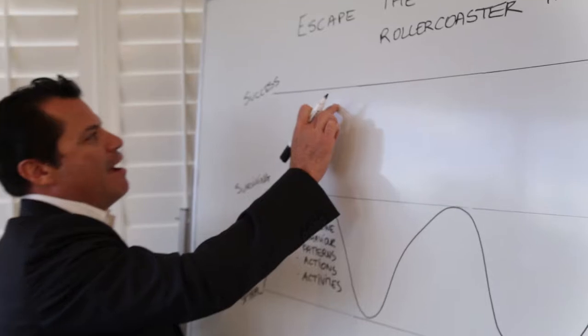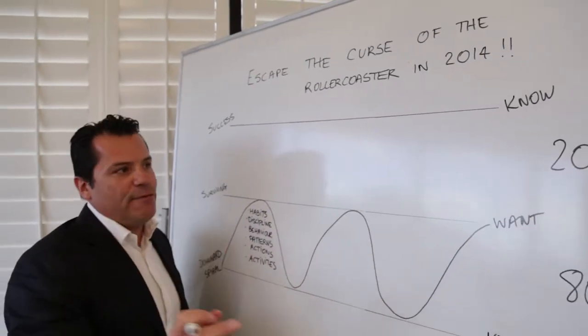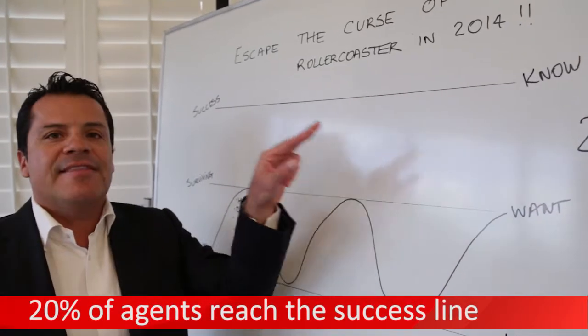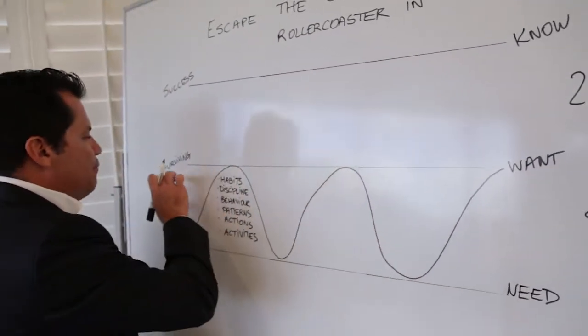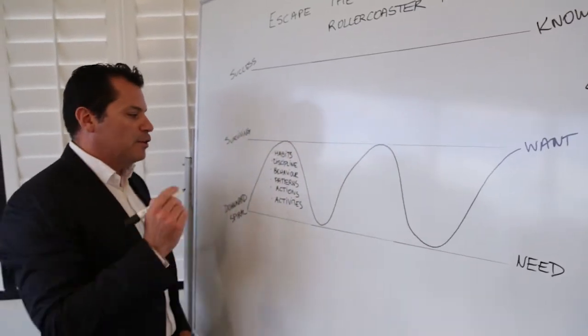And then the top line that we have right here is the success line. Now, here's the thing my friends, only 20% of agents I found made that line. Meaning that most agents, 80% of them, live between downward spiral and surviving.